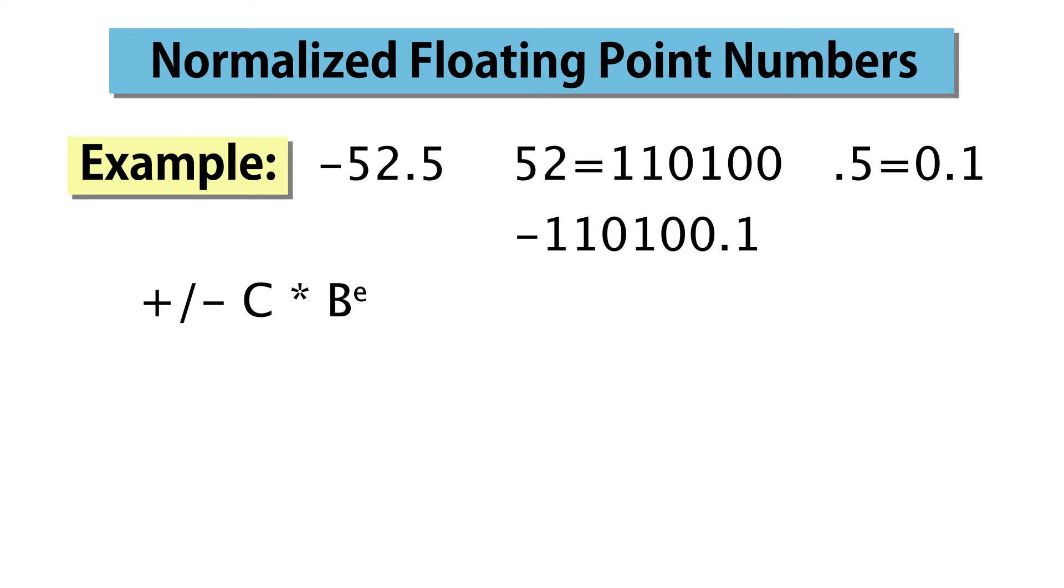Let's put our example binary number into this form. Of course, the sign remains unchanged, but we need to adjust our constant so that there's a single one to the left of the binary or radix point. That means moving the binary point left by five positions. To compensate, we multiply the result by 2 to the fifth.